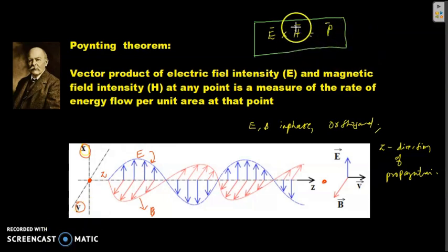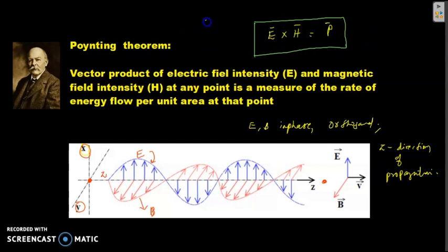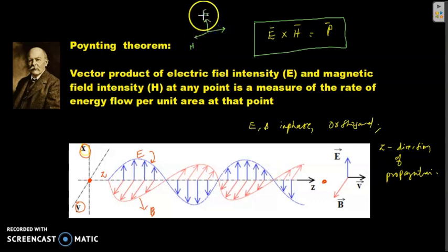The direction of P is perpendicular to both E and H. So P is perpendicular to E and H, meaning P is the cross product of E and H.